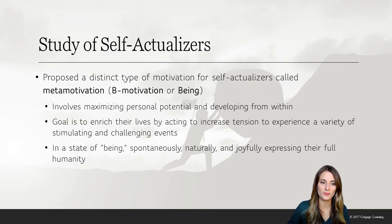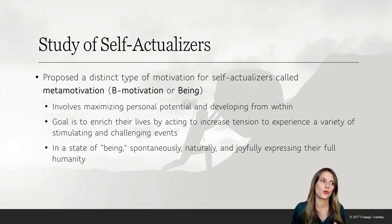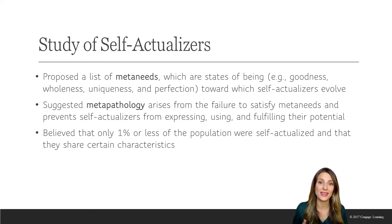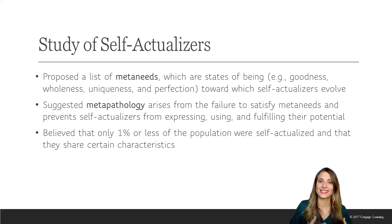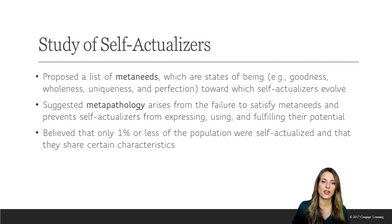He used the B — the being label — to refer to the fact that self-actualizers are in a state of being. They are being who they are, who they are supposed to be. They act spontaneously, search for new opportunities, and are not afraid of new experiences. He came up with a list of metaneeds to explain these different states, including goodness, wholeness, uniqueness, and perfection — adjectives used to describe the different states of being that self-actualizers enjoy. If they are unable to reach these metaneeds, they cannot fully express and realize their full potential.